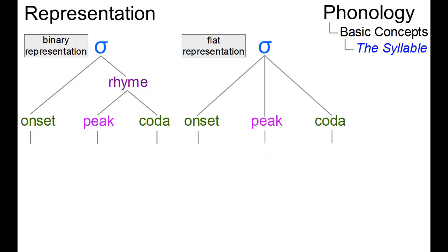Let us look at some examples. The simplest syllable, for example the first person singular pronoun I, consists of a vowel in the peak position and no onset and no coda.